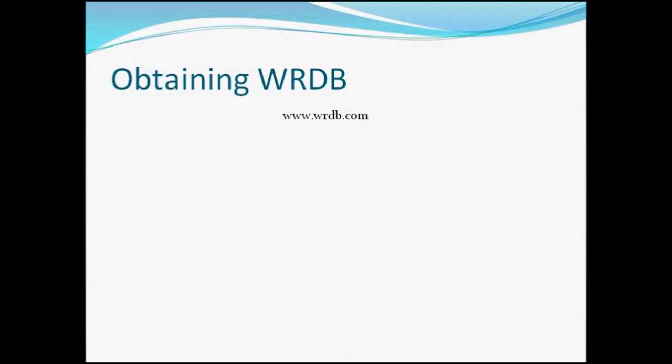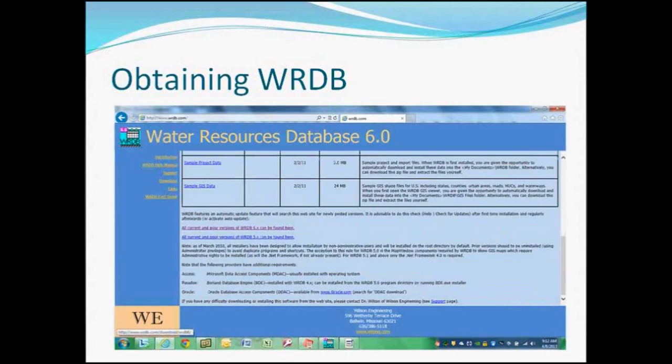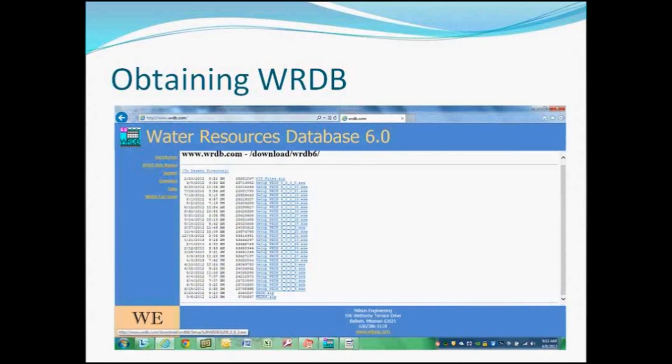To obtain a copy of WRDB, go to www.wrdb.com. Click on the link on the left that says Download. Scroll to the bottom of the page — you'll see a link that says all current and prior versions of WRDB 6.x can be found there. I'm using Build 6.0.028 for this webinar series. You should download this version or higher to make sure you have all the capabilities and functionality I'll be demonstrating throughout this series.